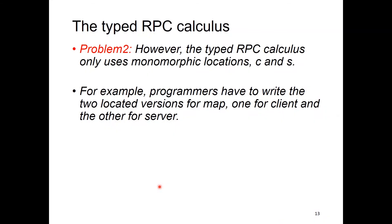The typed RPC calculus is good so far, but it has a problem because of using only monomorphic locations such as client and server, not something that can refer to both. For example, you cannot write a single polymorphically located map function. Instead, you have to write a client map function and a server map function separately.